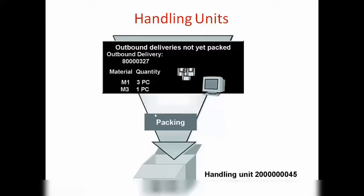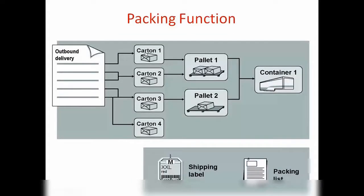You can select more than one material to pack into a carton, for example. As soon as you pack, the system will create a handling unit number. For example, I have packed my outbound delivery into this carton - these two materials into this carton. Now the second step is I want to pack that carton into a pallet, and all those pallets I want to pack into a container. So that is three-step packing, for example.